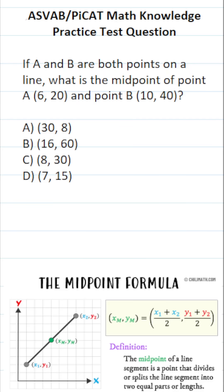This math knowledge practice test question for the ASVAB and AFOQT says: if A and B are both points on a line, what is the midpoint of point A (6, 20) and point B (10, 40)?